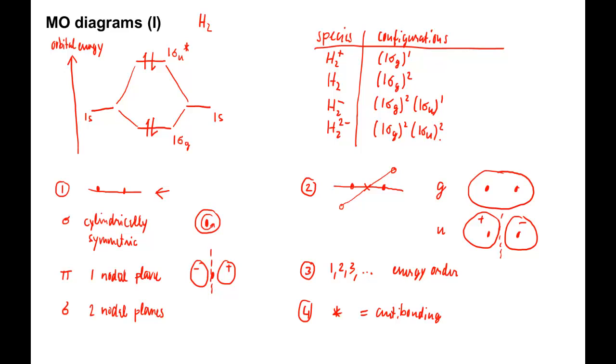This MO diagram also helps us predict molecules consisting of two helium atoms. Neutral helium-2 has four electrons and is isoelectronic to H2 2-. It is not stable and has never been observed.